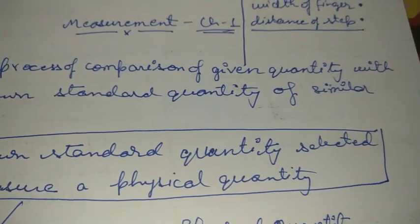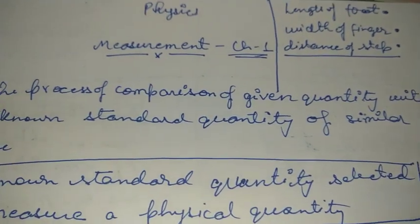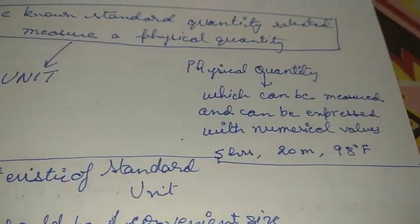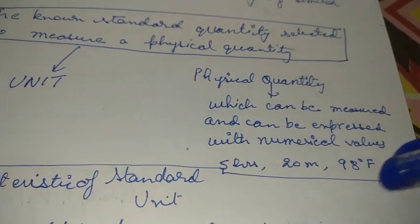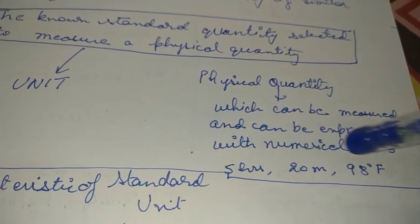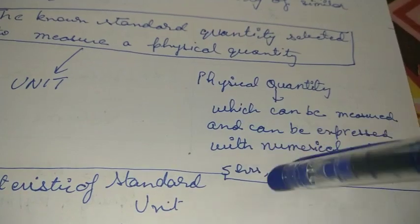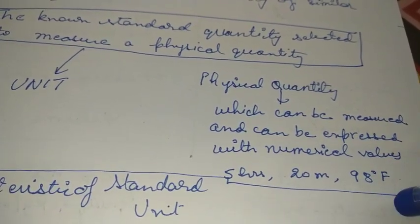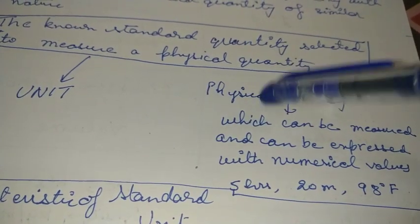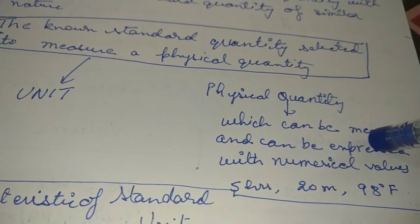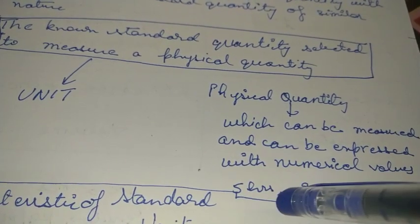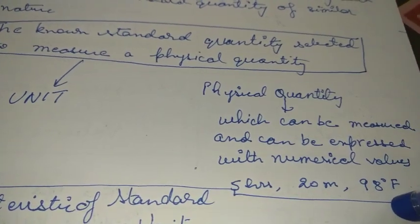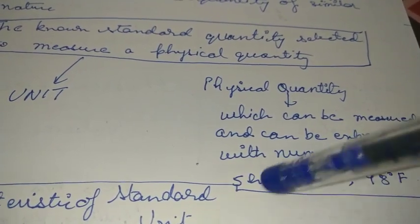The most basic aspect of the study of physics is the measurement of physical quantity. A physical quantity is simply that which can be measured or expressed with numerical values — like 5 hours, 20 meters, 98 degrees Fahrenheit. These must be familiar. Time, length or distance, and temperature — these are known as physical quantities. Every physical quantity has two parts: the numerical part (the number, like 5, 20, or 98) and the unit (like hours, meters, or Fahrenheit).